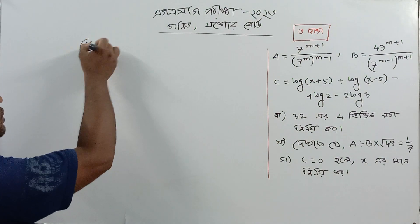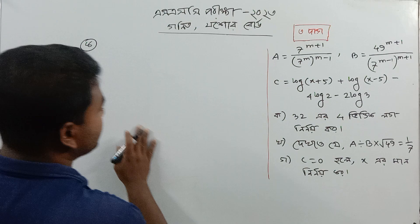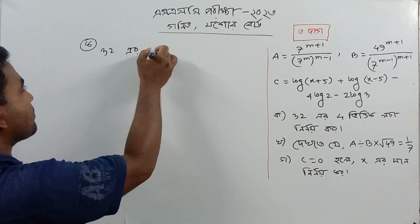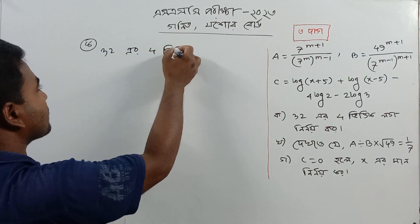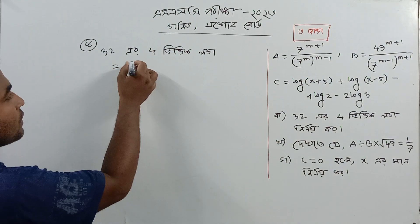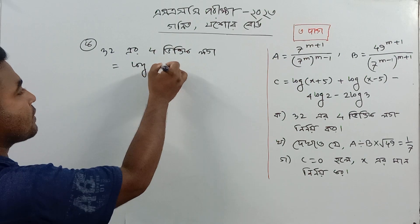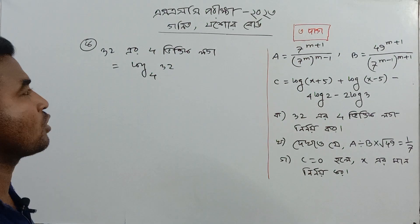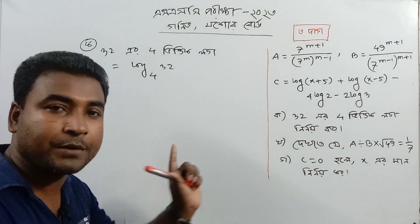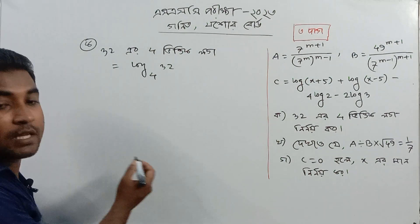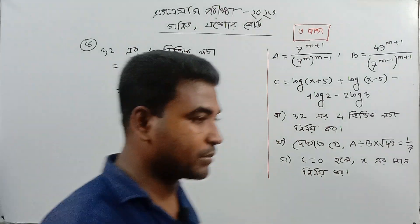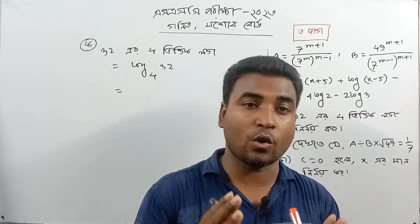What number 3 is called? 3 equals 4 equals log. That means 4 equals log. So if you look at the log, there is a problem with base 4.